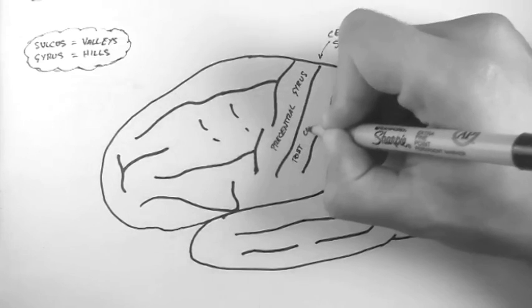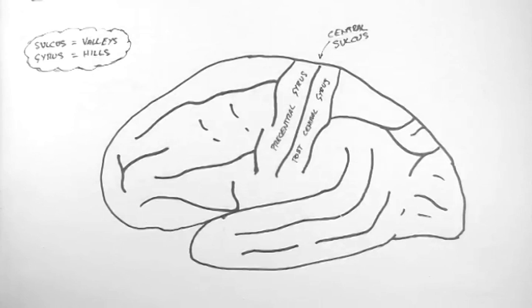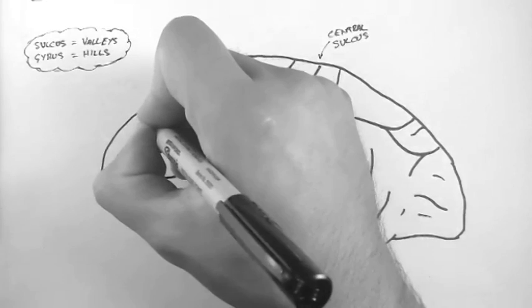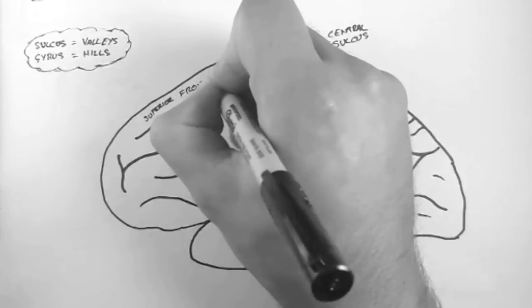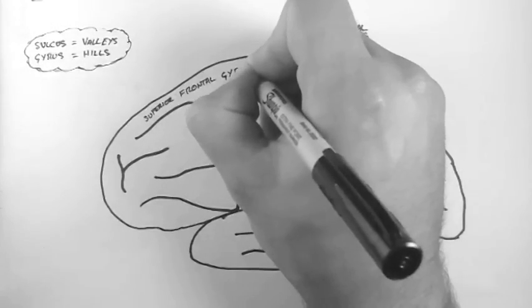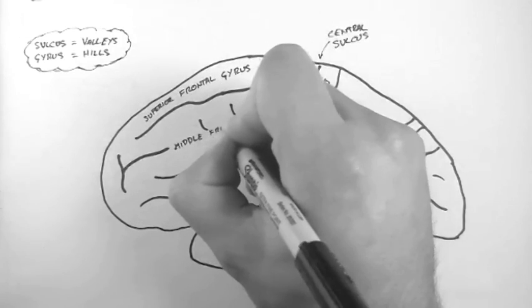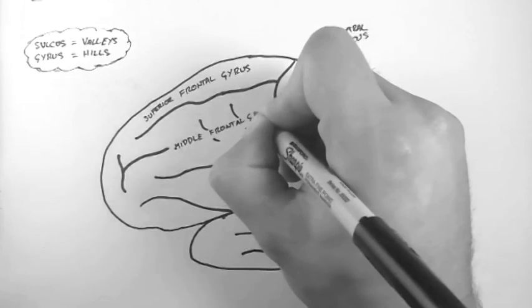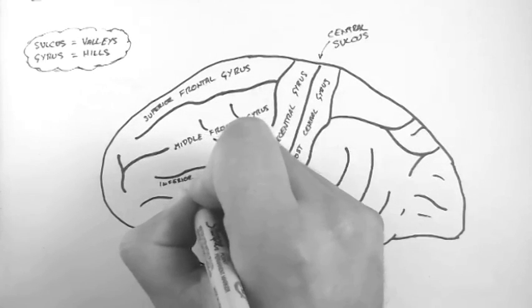So here we have the postcentral gyrus. Here is the superior frontal gyrus. Below that is the middle frontal gyrus. And down here is the inferior frontal gyrus.